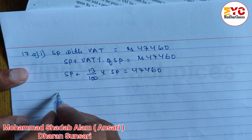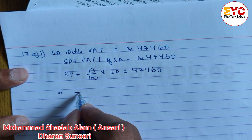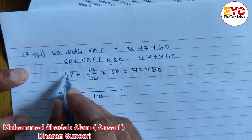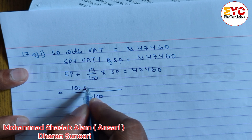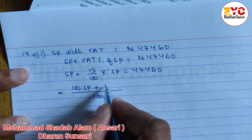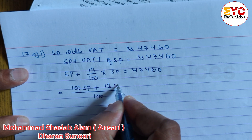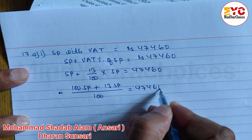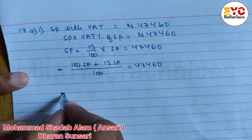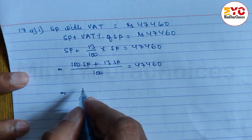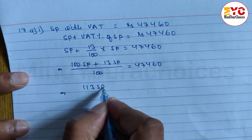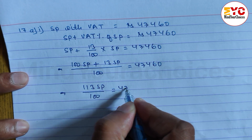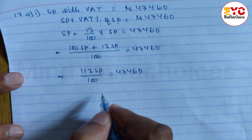Now take LCM. LCM is 100. So 100 SP plus 13 SP is equal to Rs. 47,460. Now add: 100 plus 13 equals 113. So 113 SP divided by 100 is equal to Rs. 47,460.